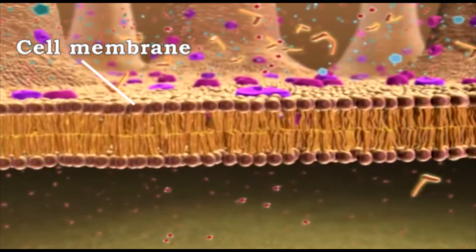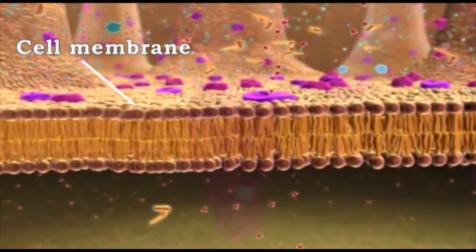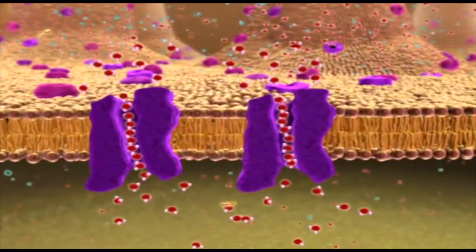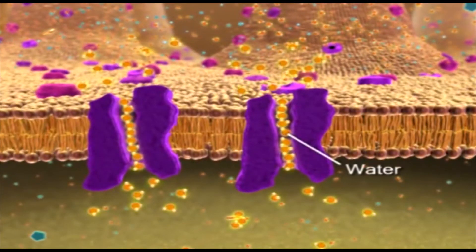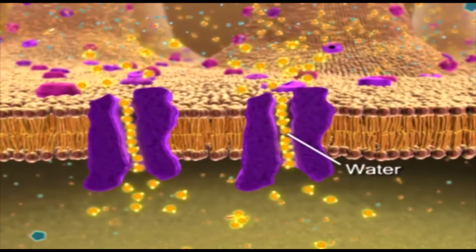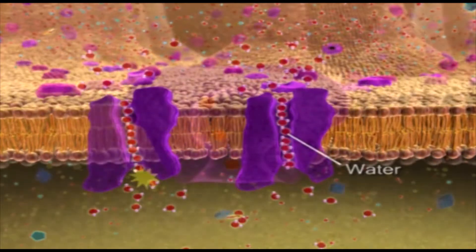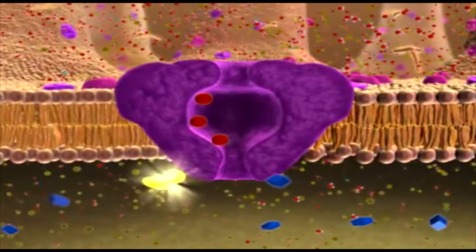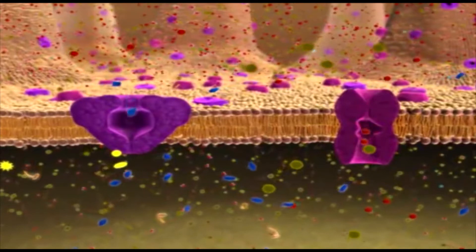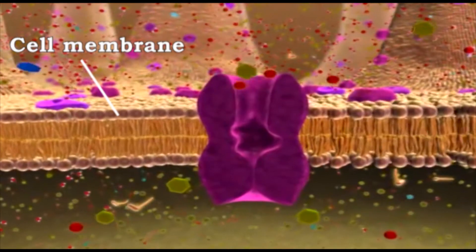The cell membrane allows the movement of some materials in and out of the cell. For example, our cells need important substances such as oxygen and glucose, and remove waste products and chemicals. These materials can enter or leave the cells through the cell membrane. But not all materials can pass through the cell membrane.